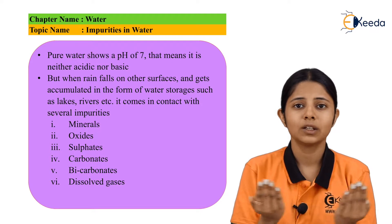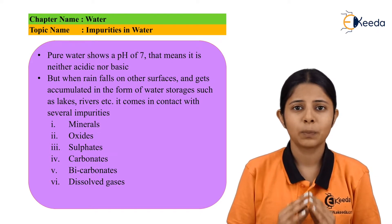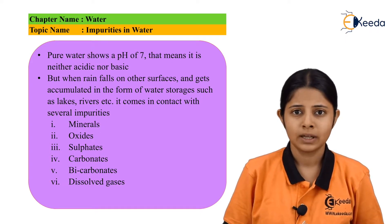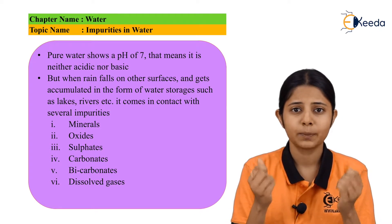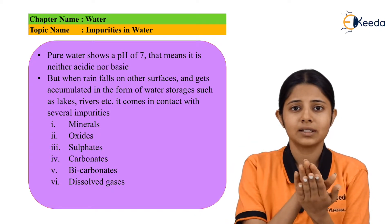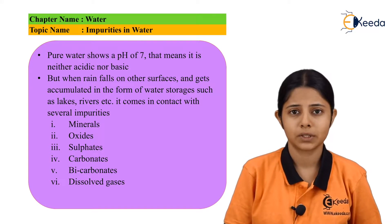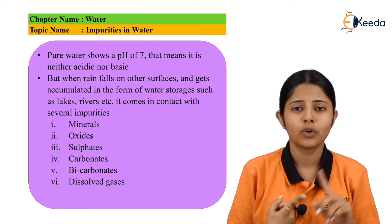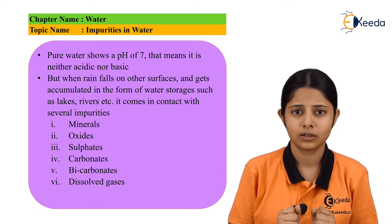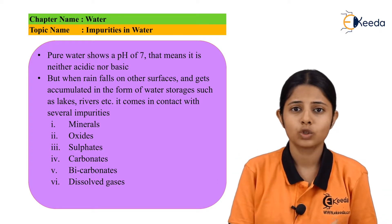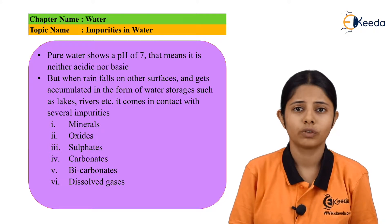But water gets in contact with the air. This air is polluted due to air pollution, and that is the reason why the substances or particles present in the air get mixed inside the water droplets. Now what are the different substances? The first is minerals. There are various minerals present even in the air and also in the soil, and these minerals get easily dissolved in water.